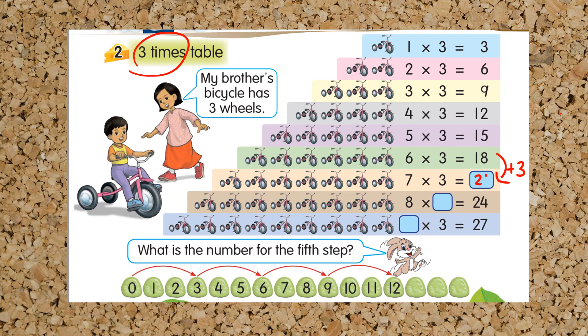You will get 21. Now this is 8 multiplied, what will become 24? 8 multiplied by 3 will become 24. And after 8 is 9, so 9 multiplied by 3 equals 27.